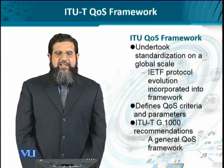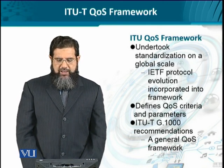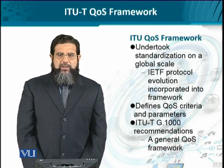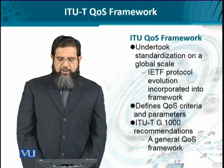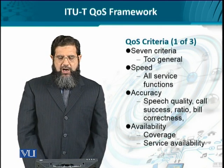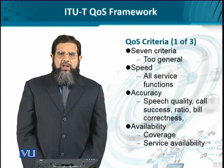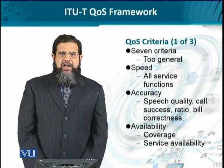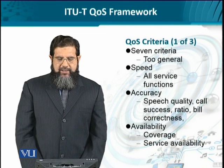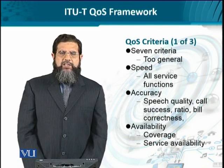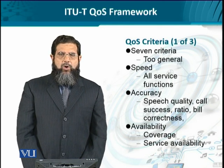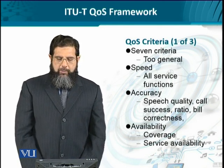The QoS criteria and parameters are defined by ITU-T in a document known as recommendation G.1000. It is a general QoS framework with seven criteria that provide a holistic and complete view of what QoS should look like. For instance, it defines the speed of different service functions and the response expected from each functional element. Then there is accuracy — in terms of, for example, an audio call: the speech quality, the probability of a successful call, and the billing which takes place for that call duration.